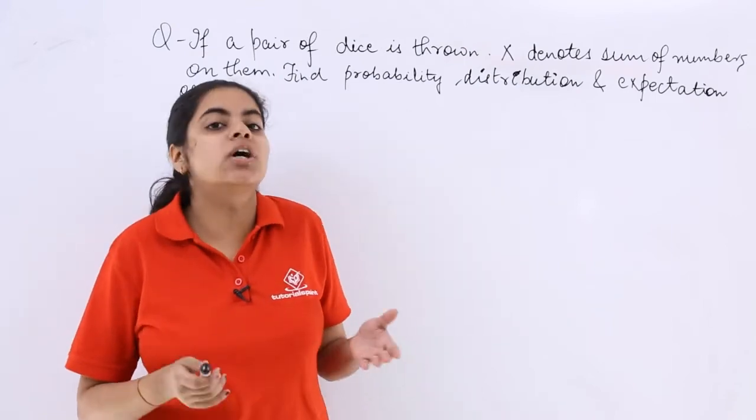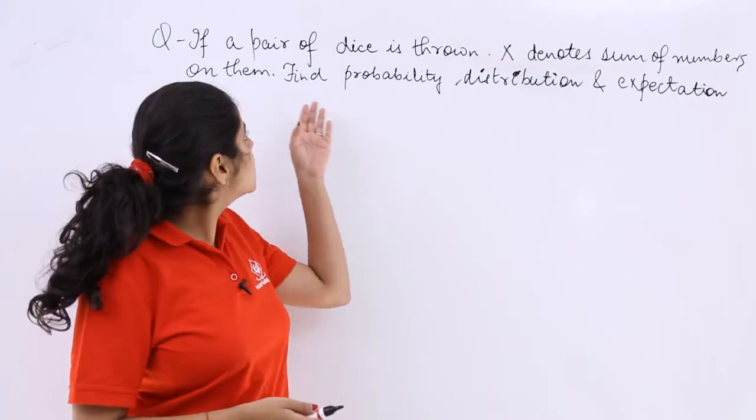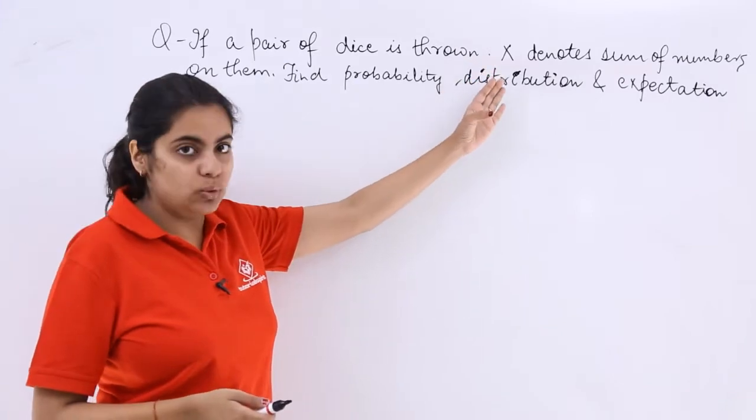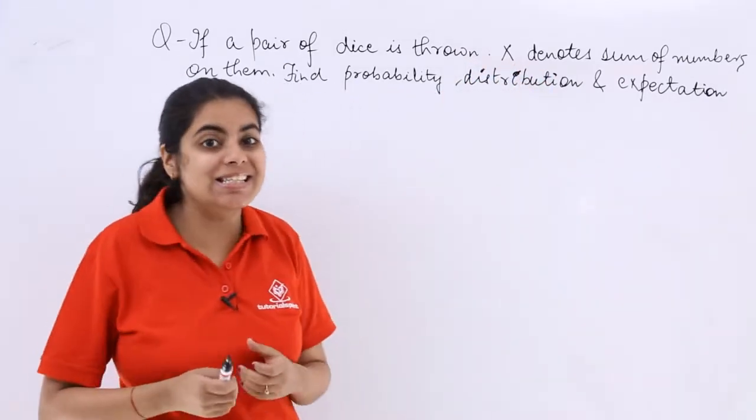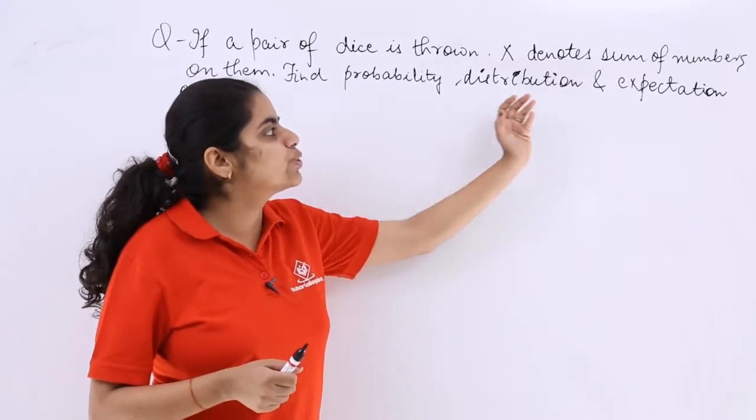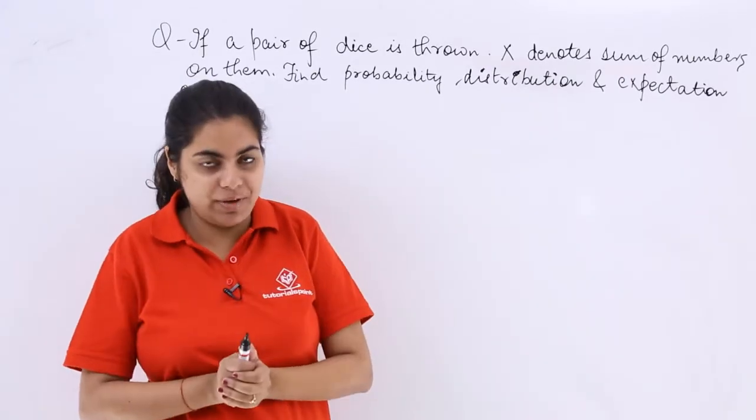In this video, let's see a question in your NCERT books. Now it says, if a pair of dice is thrown, X denotes the sum of numbers on them. So X is the sum of numbers on them. Find the probability distribution and expectation of X.